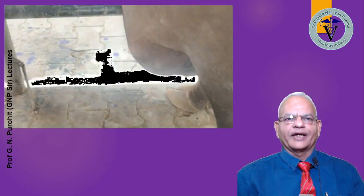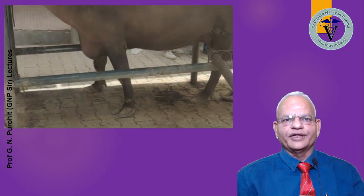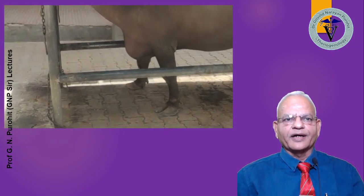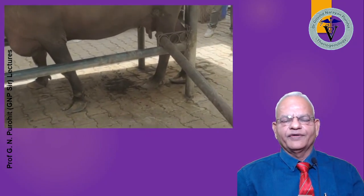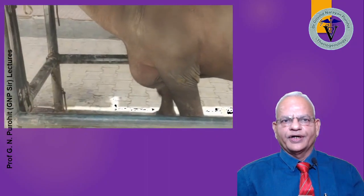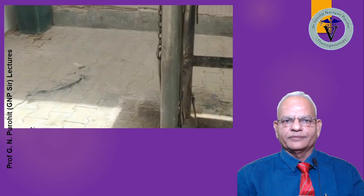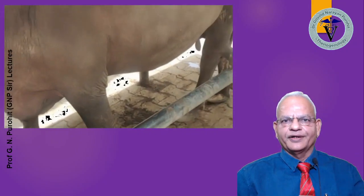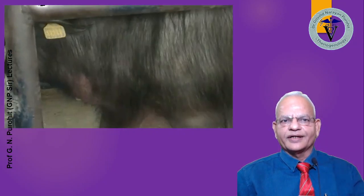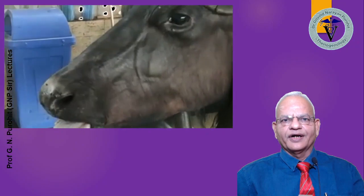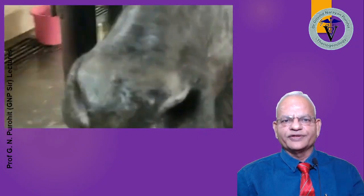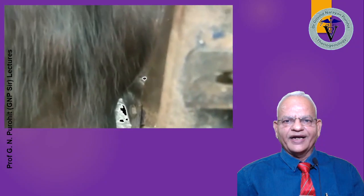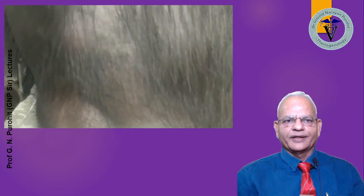Brisket edema, and sometimes edema extending up to the jaw, will be found in animals suffering from traumatic pericarditis. The animal will also have difficulty in breathing because of the pericarditis. Signs may appear, go away, and then again appear at a later time. You can see this buffalo is having difficulty — open mouth respiration — and this buffalo is also having edema on the brisket.